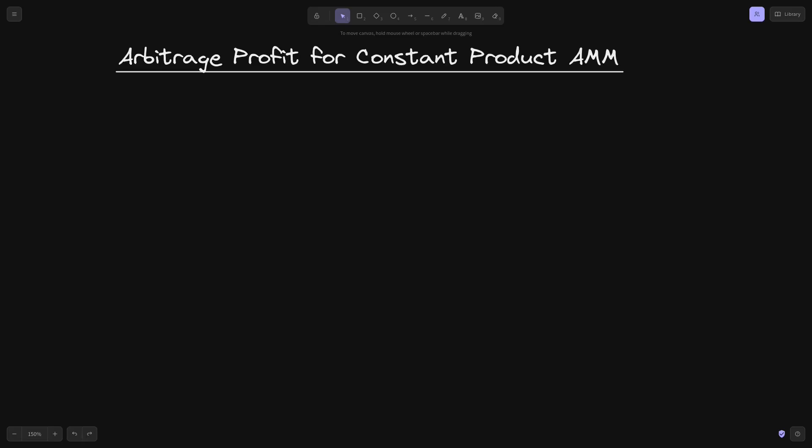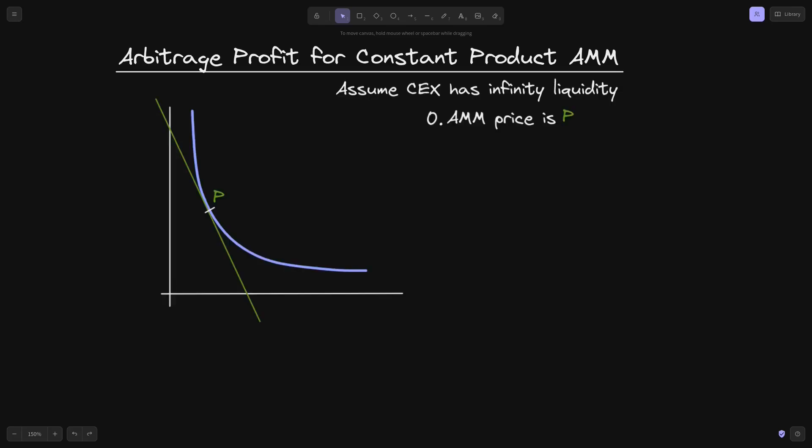In this video, I'll explain some equations related to the arbitrage profit for a constant product AMM. Assume that a centralized exchange has infinite liquidity. The AMM has token X and token Y, and the price P is equal to Y divided by X. On the centralized exchange, the price is lower: P minus DP. From the price difference between P and P minus DP, an arbitrager can make a profit.